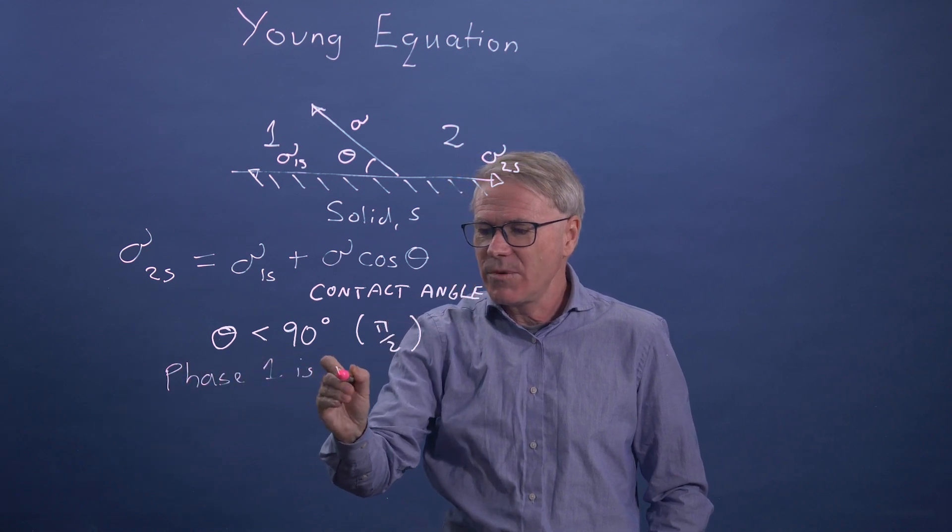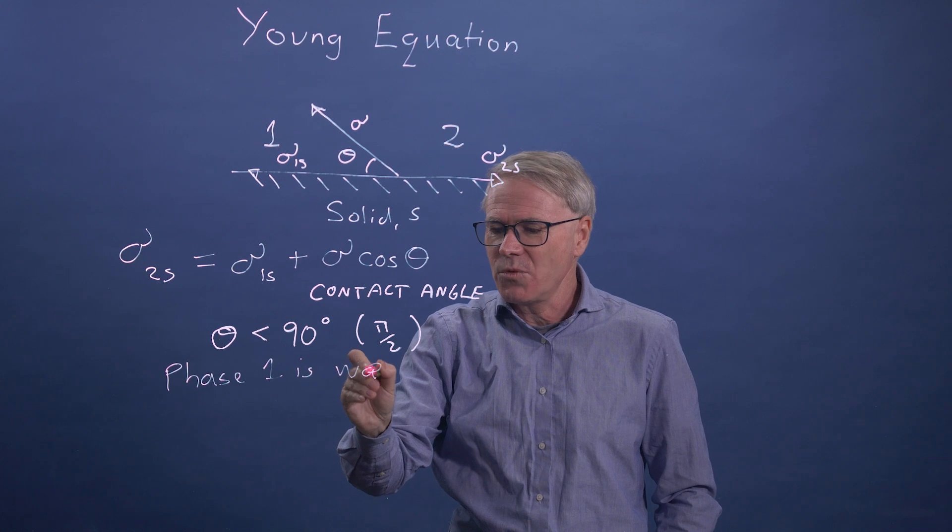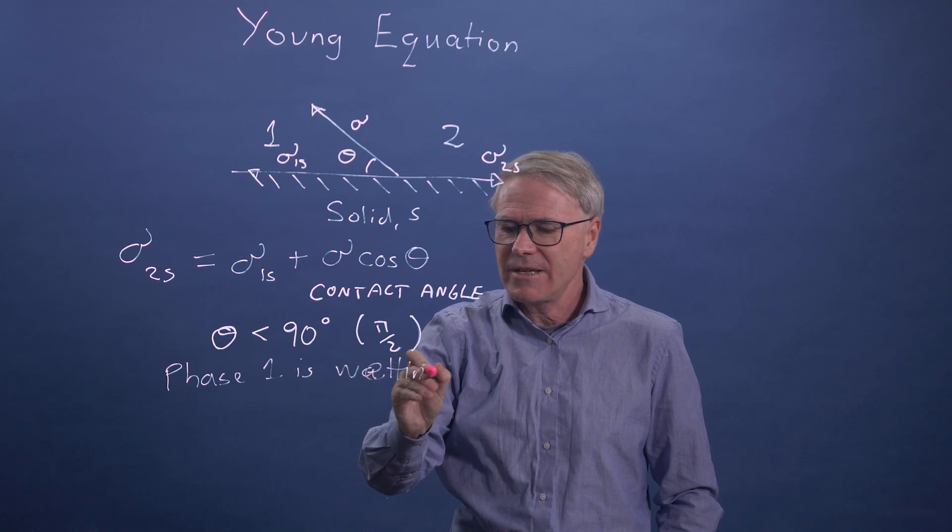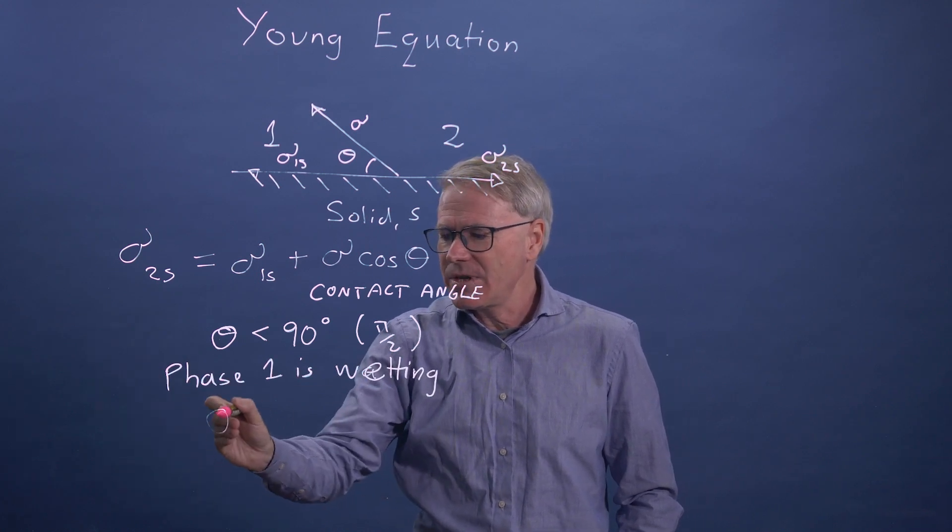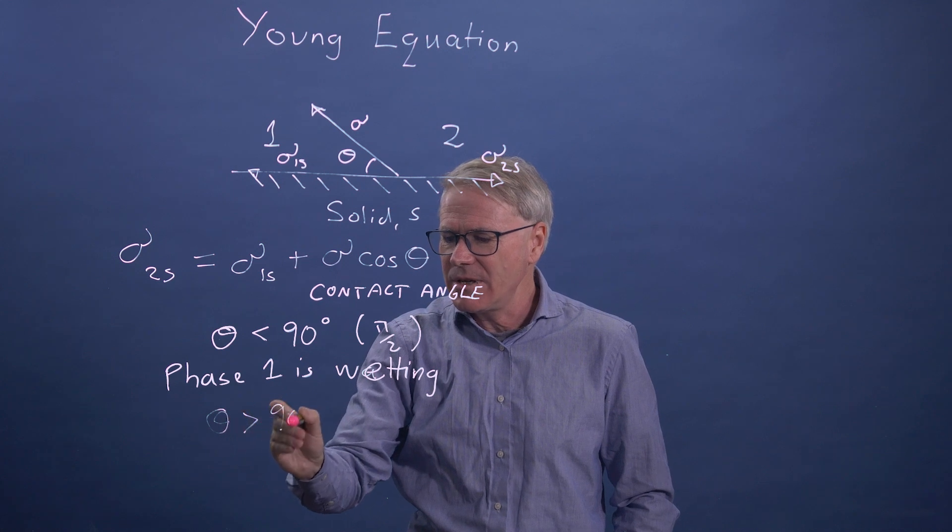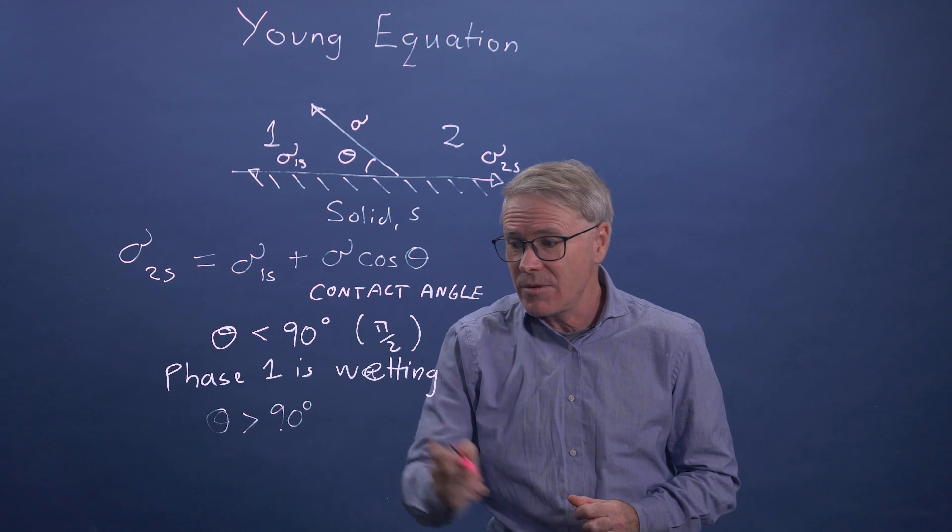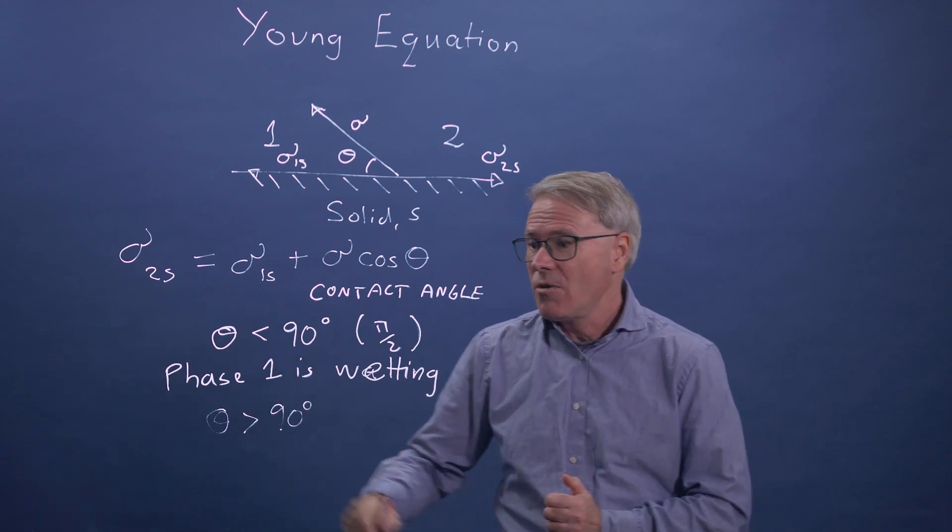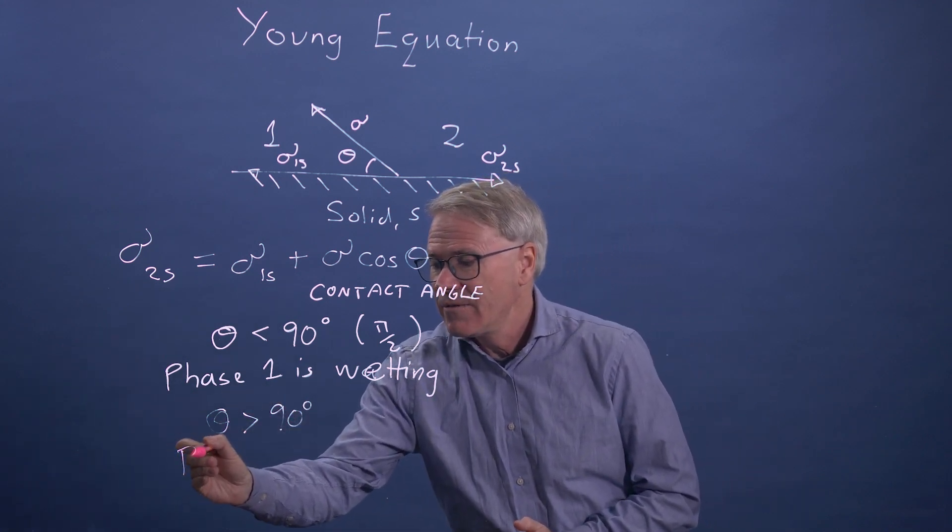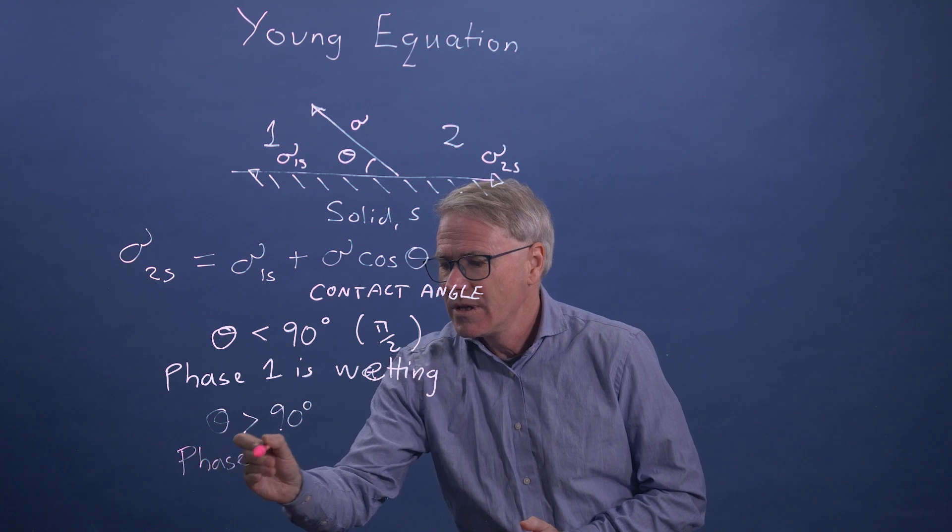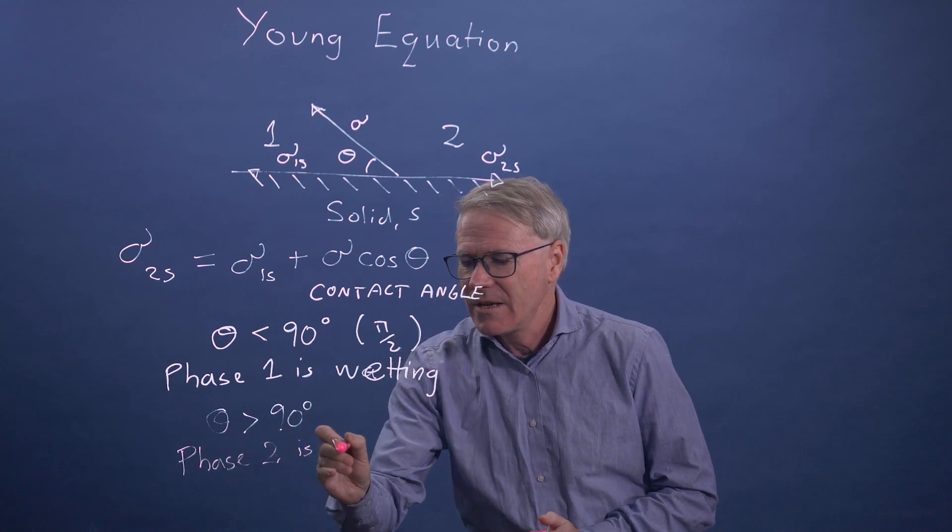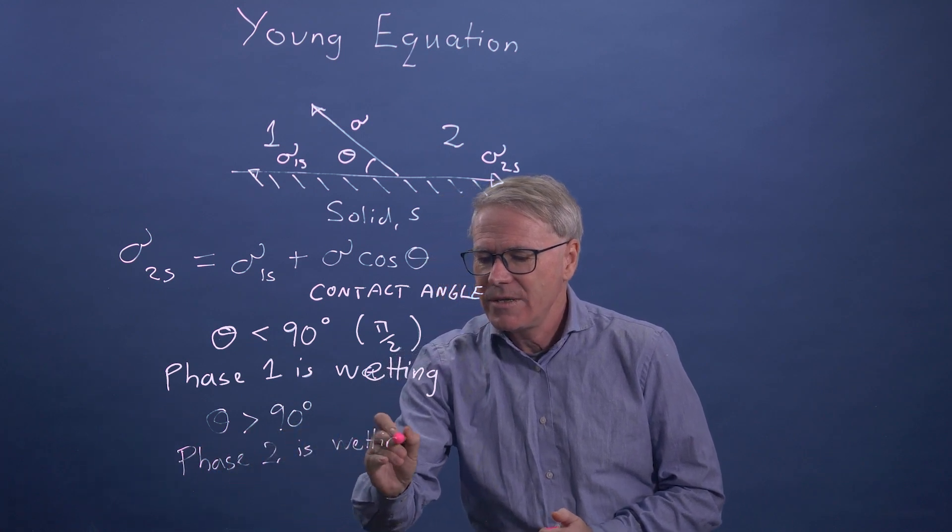And if this is water, we would call this water wet. So it's phase one is the wetting phase. And if the contact angle is greater than 90 degrees, and there's nothing stopping us having a contact angle that's greater than 90 degrees or unusual about this, then phase two is wetting and phase one is non-wetting.